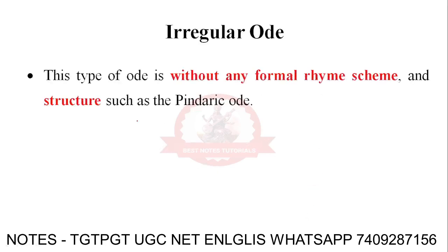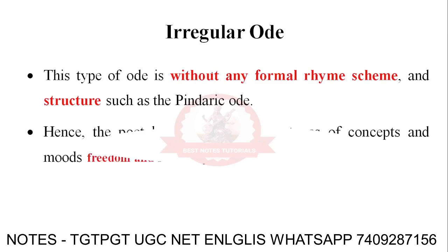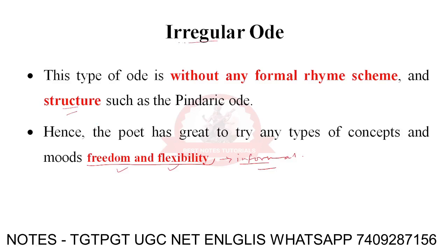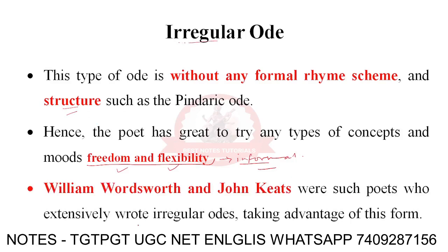Irregular odes are without any formal rhyme scheme and structure, unlike Pindaric odes. The poet has great freedom and flexibility because these are informal. There is no fixed structure, and that's why they are called irregular odes. William Wordsworth and John Keats were poets who extensively wrote irregular odes, taking advantage of this form.